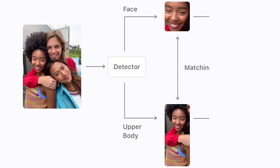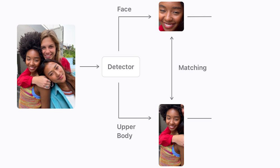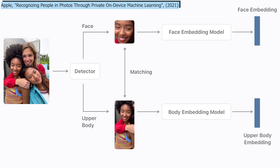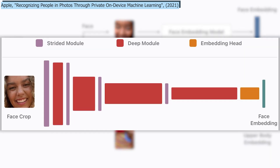Then they match the bodies and faces of each individual to have even more data about the person in case only one of the two appears in a future image. You can see here that both the body and face are sent into a separate model that encodes the information, creating embeddings. These embeddings are simply the most valuable information about the face and body of the person. We use another network to encode the information because we want our embeddings to be similar for the same person and different for different individuals. This is done with another model inspired by MobileNet, which I talked about in my convolutional neural network video.